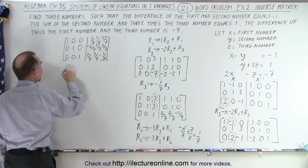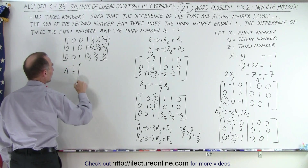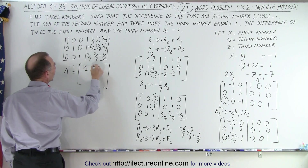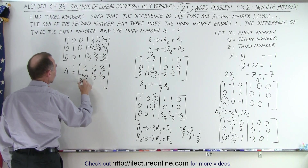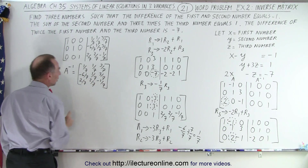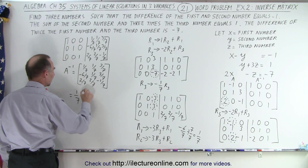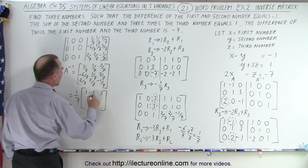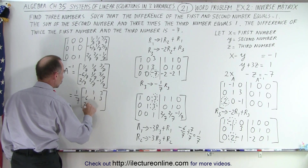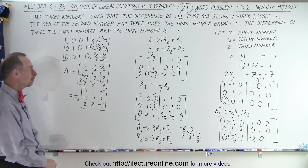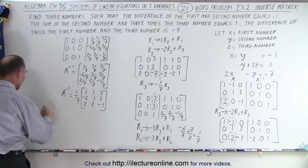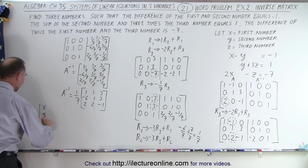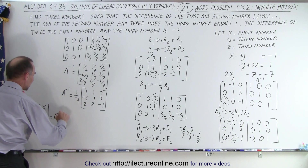Notice that this is the A inverse matrix. A inverse is equal to: first row 1 over 7, 1 over 7, 3 over 7; second row negative 6 over 7, 1 over 7, 3 over 7; third row 2 over 7, 2 over 7, negative 1 over 7. Or, I can factor out 1 over 7, so this equals 1 over 7 times the matrix [1, 1, 3; negative 6, 1, 3; 2, 2, negative 1] — that's probably a cleaner way of writing it. Now that we have the inverse matrix A inverse, I can solve for X, Y, and Z: X, Y, Z equals A inverse times the B matrix.